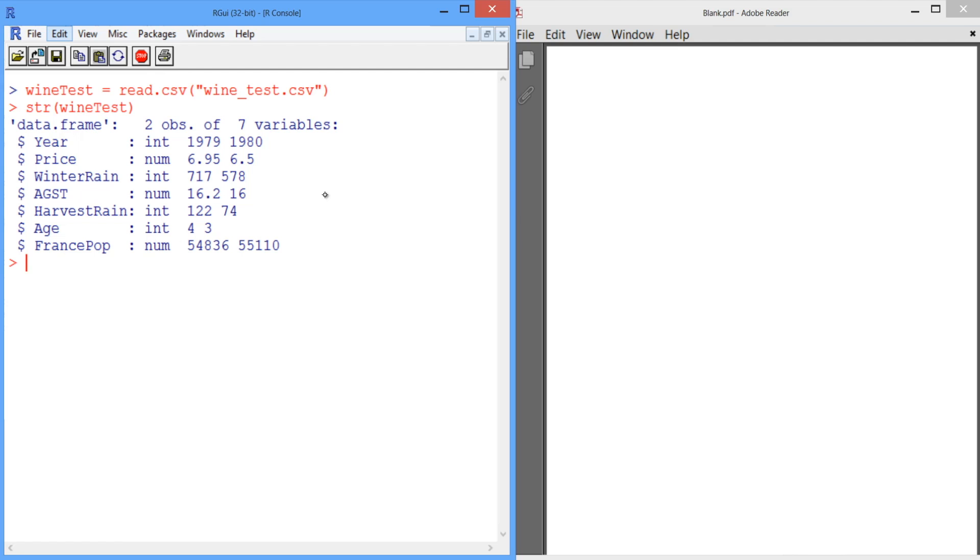To make predictions for these two test points, we'll use the function predict. We'll call our predictions predictTest and use the predict function. The first argument to this function is the name of our model. Here, the name of our model is model4. Then, we say newdata equals the name of the data set that we want to make predictions for, in this case, wineTest.